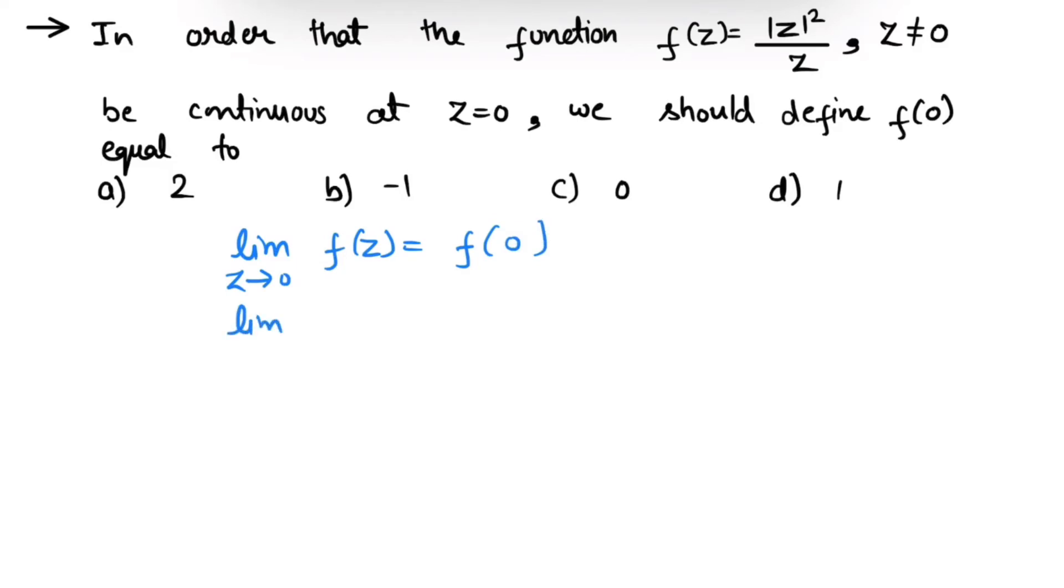So we have limit z tending towards 0, and f(z) is |z|²/z, and this equals to f(0). Now we can write this |z|² as z times conjugate of z over z.